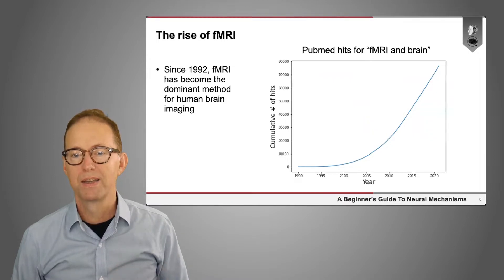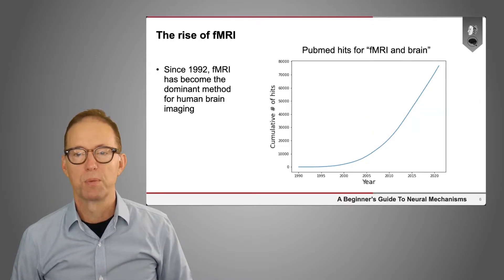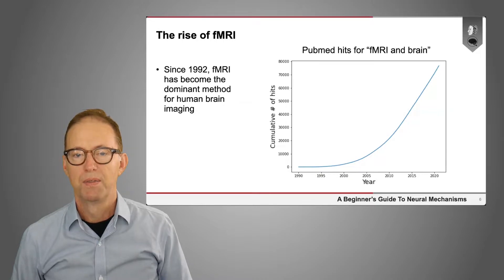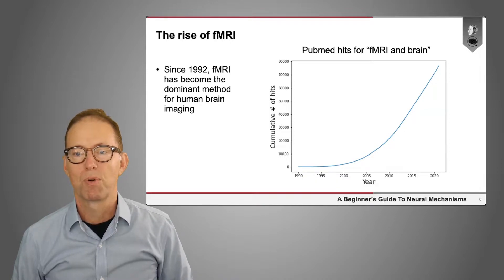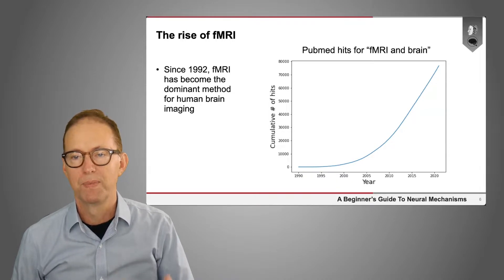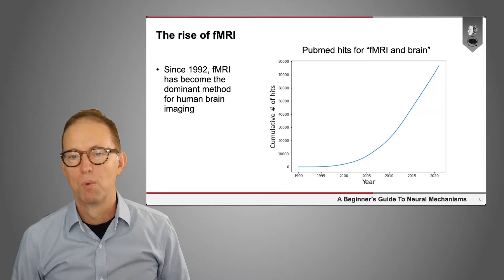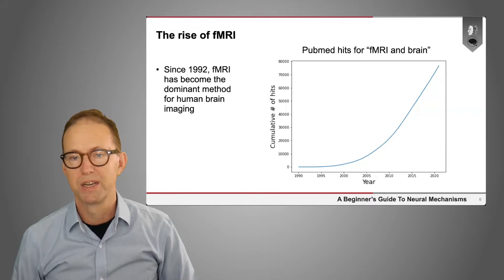fMRI has become pretty much the dominant method for human brain imaging. This is shown in a plot of the cumulative number of hits in the PubMed database for a search on functional MRI and brain. There are now more than 10,000 publications a year, and it's increasing rapidly.